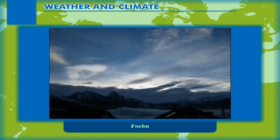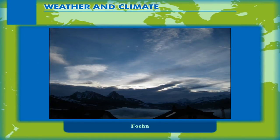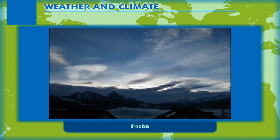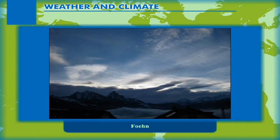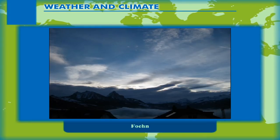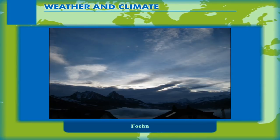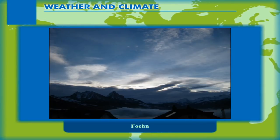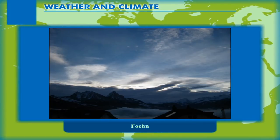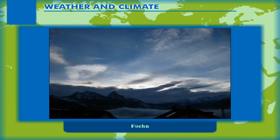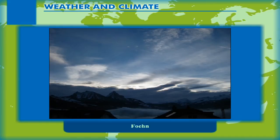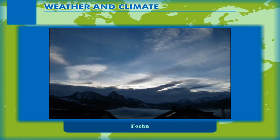Fein is similar to Chinook. It blows down the southern flanks of the Alps during winters and helps in ripening of grapes in southern Europe.